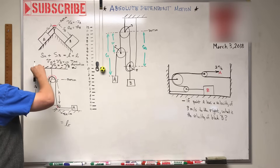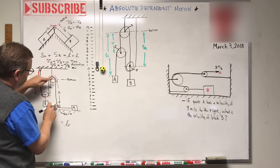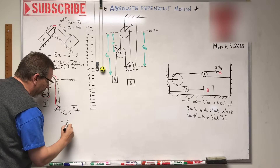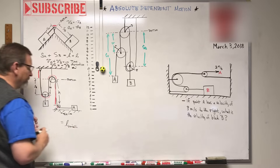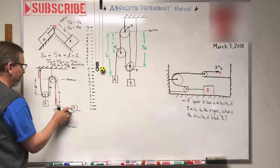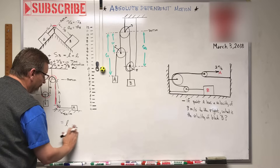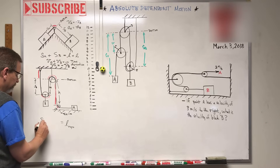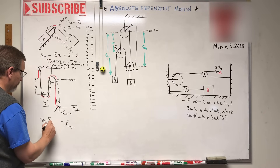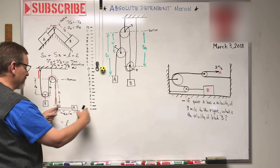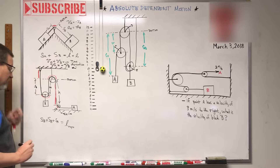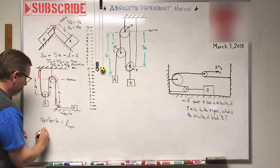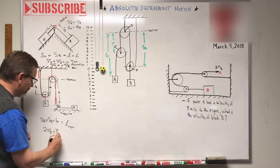So the total length of the rope equals S-B, and there's another S-B, plus S-A. So what I'm going to get is: the length of rope equals S-B plus S-B plus S-A. If I take the time derivative of that, this constant total length goes to zero. So what I'm going to get is two times velocity of B plus the velocity of A equals zero. Or: two times the velocity of B equals negative the velocity of A. And the same thing goes for acceleration: two times acceleration of B equals negative acceleration of A.